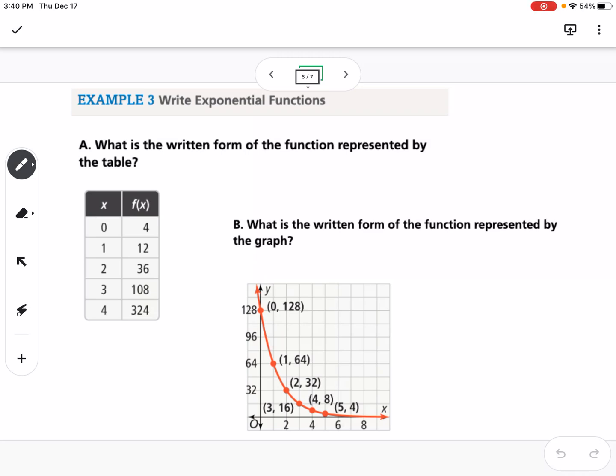So for example 3, we're going to write the equation based on the table and the graph. So the first thing we need to do is we need to identify what is our initial value. So you're going to find that by finding where x is 0. So if I look right here, x is 0 and our y is 4. So that means when we're writing this equation, it's going to be f(x) = 4. And then we need to figure out what are we multiplying by each time. So I need to say 4 times what gives me 12? Well, we know that's 3. 12 times 3 gives me 36. 36 times 3 gives me 108. And 108 times 3 gives me 324. So that means the number inside the parentheses would be 3, and it's raised to the x. So that would be the equation for that table.